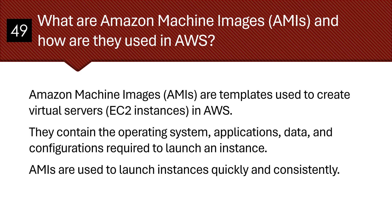What are Amazon Machine Images, also known as AMIs, and how are they used in AWS? AMIs are templates used to create virtual servers in AWS. They contain the operating system, applications, data, and configurations required to launch an instance. AMIs are used to launch instances quickly and consistently.